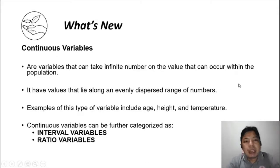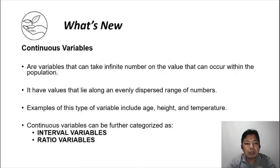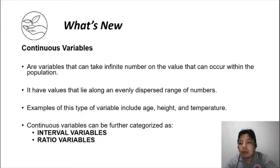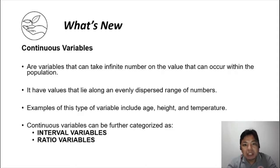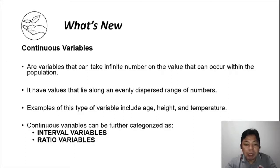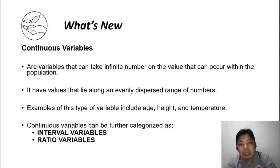Let's talk about continuous variables. Continuous variables are variables that can take an infinite number of values within the population — meaning, the value of a continuous variable has no ending. For example, length has no ending — it doesn't stop at one million inches or one billion inches. Another example is age, which also doesn't have any ending — one million years, one billion years, one trillion years. So we call it continuous because it goes on without end.